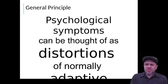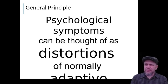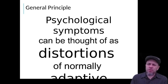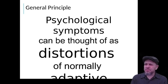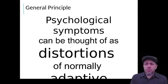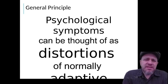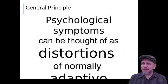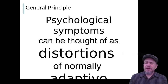A general principle in psychopathology is that psychological symptoms can be thought of as distortions of normally adaptive processes. These normally adaptive processes are usually good for us — they usually help us. On average, statistically, throughout the history of the human race, they have helped us to avoid danger, maximize our benefits, stay alive, get calories, reproduce, etc. Evolutionary stuff.